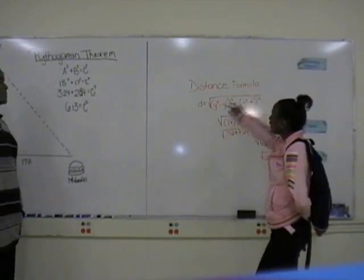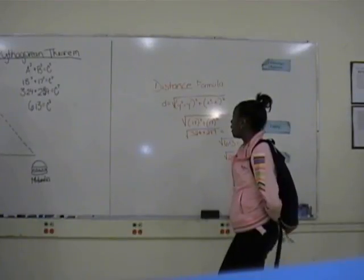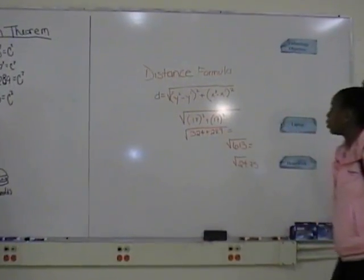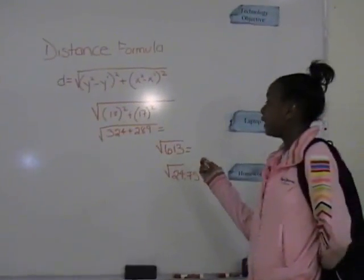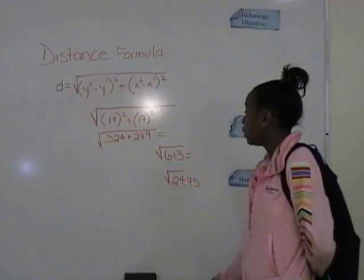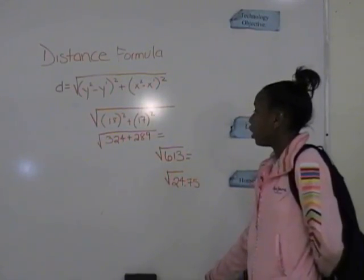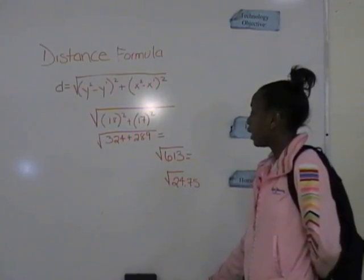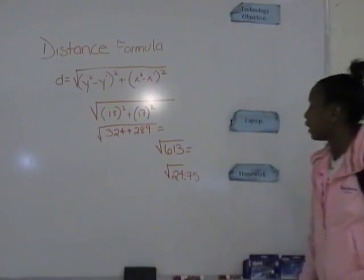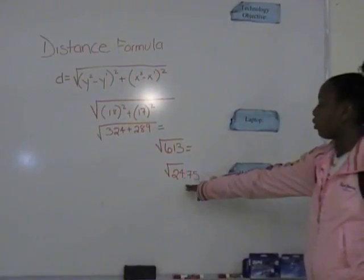There's a distance formula, which is D equals the square root of Y2 minus Y1 squared plus X2 minus X1 squared. And then I had 18 and 17. So I squared 18, which is 324, and I squared 17, which is 289. And 324 plus 289 gave me 613, and the square root of that was 24.76.